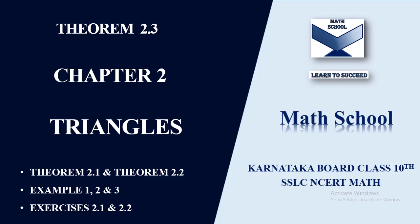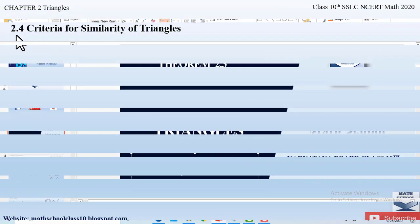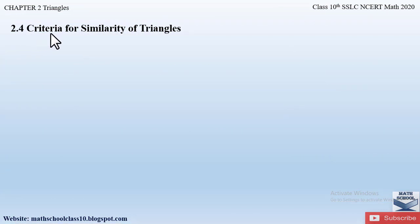So now quickly let us begin with the video. Section 2.4 from Chapter 2, Triangles, is 'Criteria for Similarity of Triangles.'